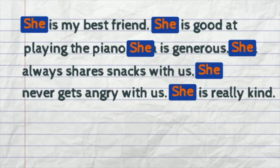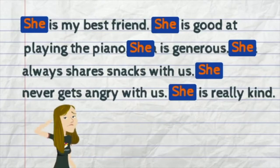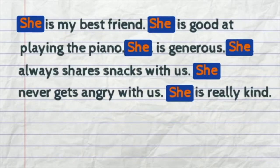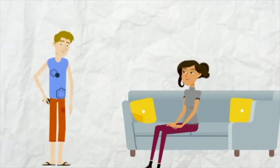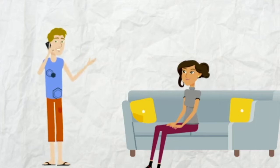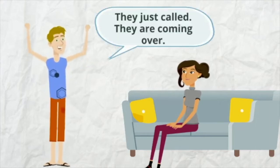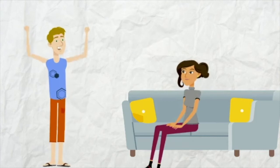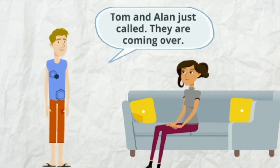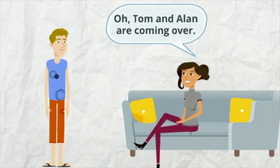She is my best friend. She is good at playing the piano. She is generous. She always shares snacks with us. She never gets angry with us. She is really kind. Who is she? So we need to keep 'Tina' in the first sentence so that our reader will know who we are talking about. It is also important to state the subject when you speak. For example: 'They just called. They are coming over.' — 'Who?' — 'Tom and Ellen just called. They are coming over.' — 'Oh, Tom and Ellen are coming over!'